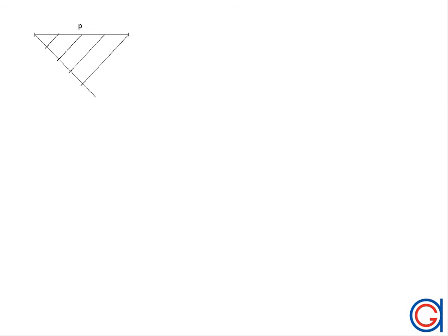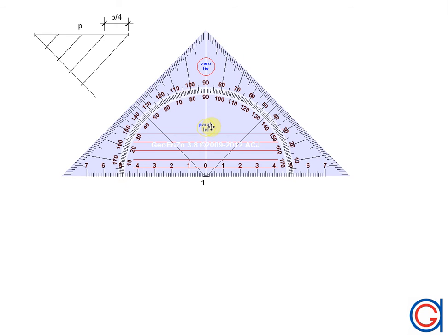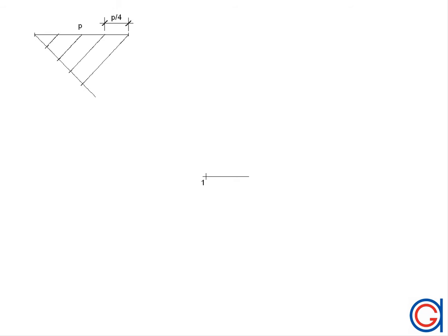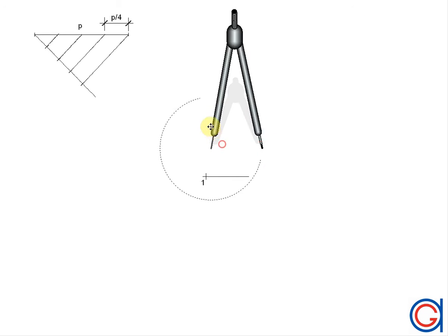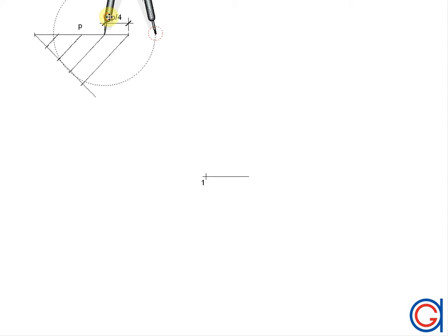So now we are going to name one of the fourths, which will be the length of one side of our square. So now in the center of the drawing, we are going to mark the first center, which will be called number one. From this center point, we will draw a horizontal line to the right, as can be seen here. So now we set our compass to the length 1 fourth of p, and we will transport this length onto our horizontal line, starting at point 1.